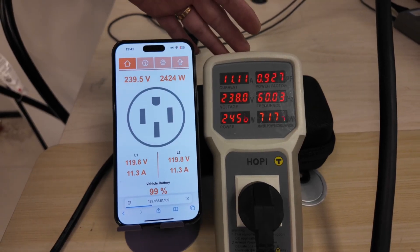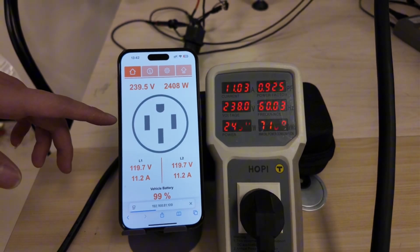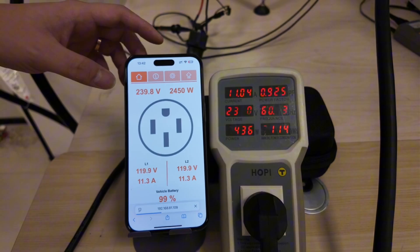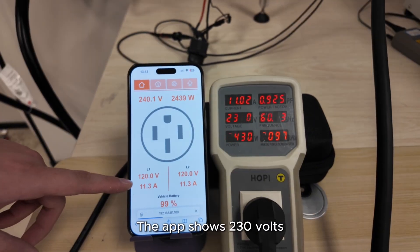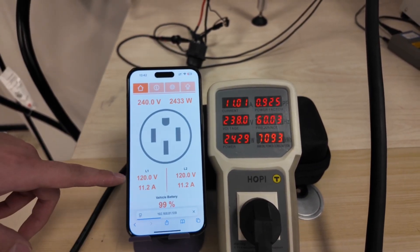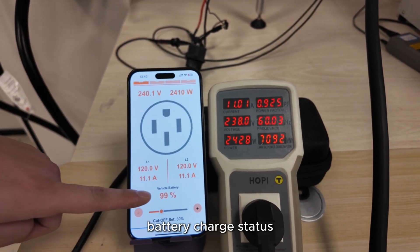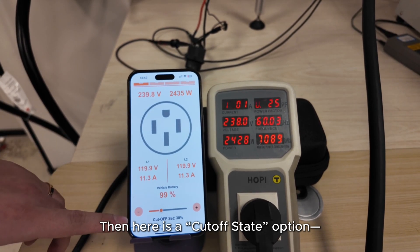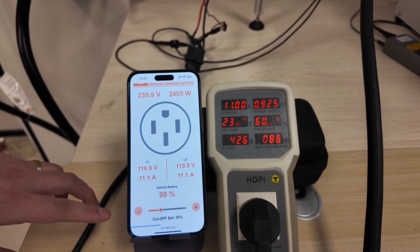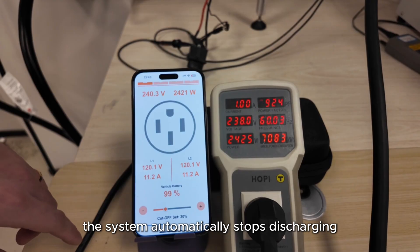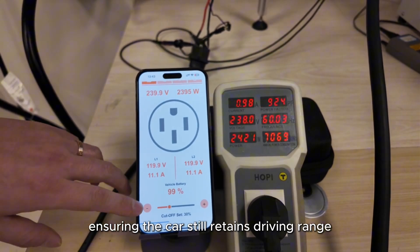This is a power meter and this is our app interface. We can see the current output voltage is 238 volts. The app shows 230 volts. It also displays details for L1 and L2. L1 and this 99% shows the current vehicle battery charge status. Then here is a cutoff state option. When the battery level drops below 30%, the system automatically stops discharging, ensuring the car still retains driving range.